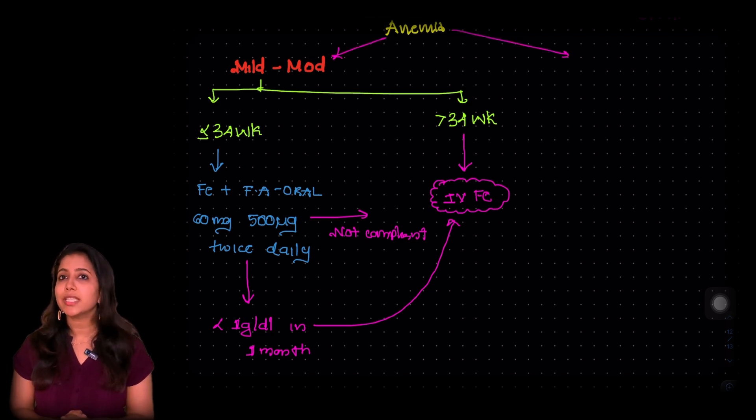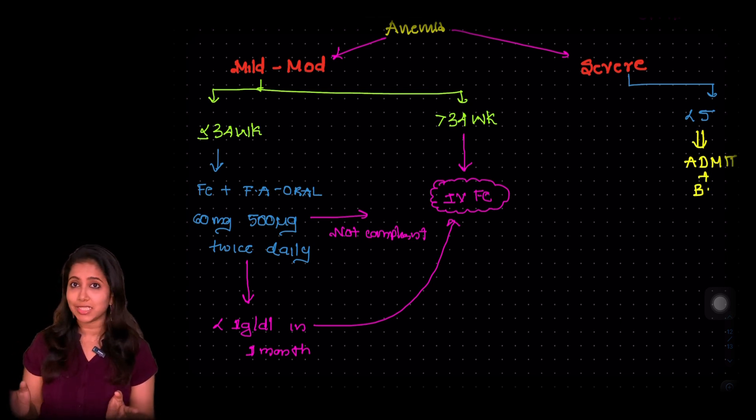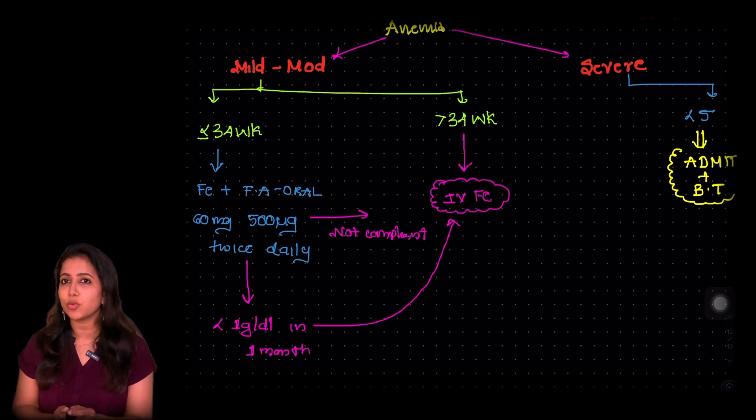Let's suppose the patient has severe anemia. So again I want you to divide them as less than 5 or more than 5 that is 5 to 6.9. So less than 5, the 5 looks like an S and we are going to consider this situation seriously. We would admit the patient immediately and give her blood transfusion.